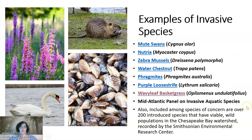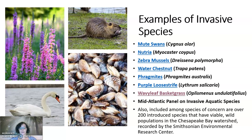Examples of invasive species here in Maryland include, but are not limited to: mute swans, nutria (which remind me of a very large rat), zebra mussels, water chestnut, phragmites, purple loosestrife, wavy leaf basket grass, and many more. Also included among species of concern are over 200 introduced species that have viable wild populations in the Chesapeake Bay watershed — that's not a small number.